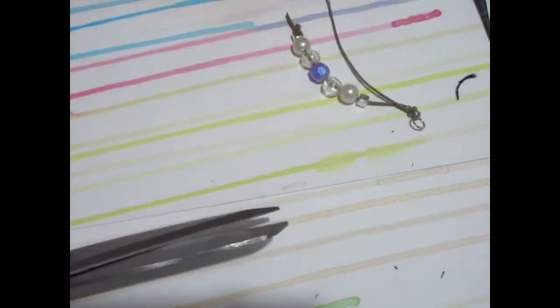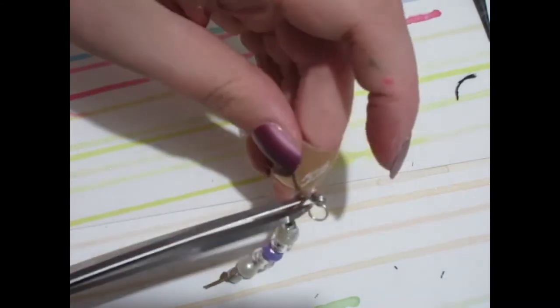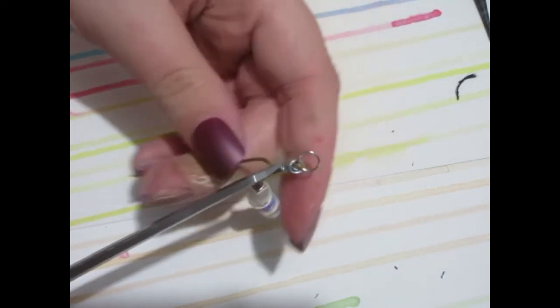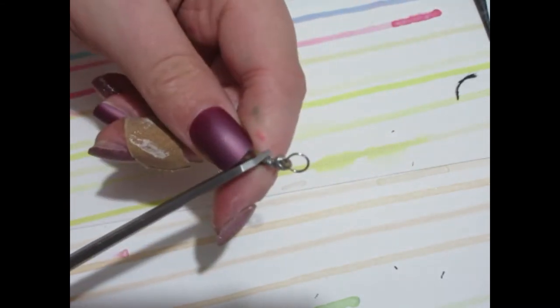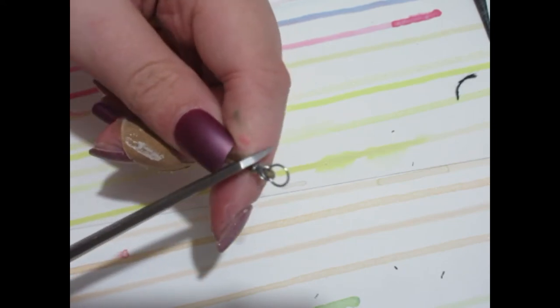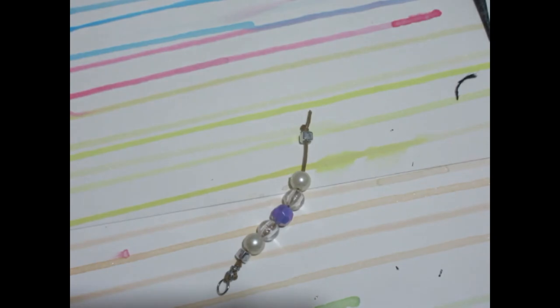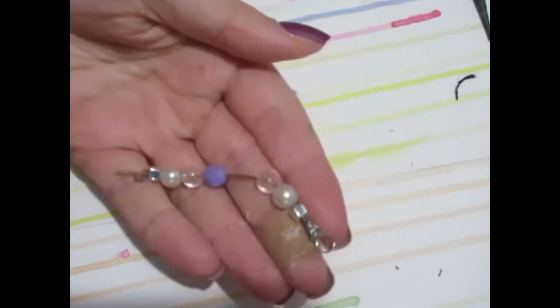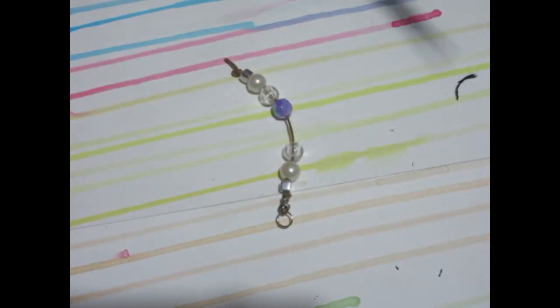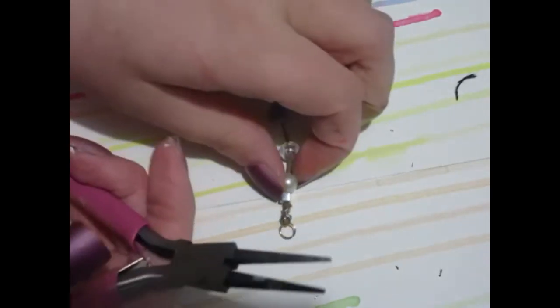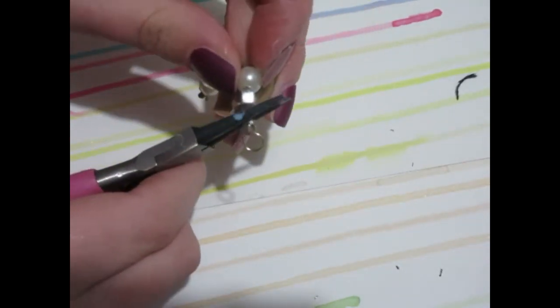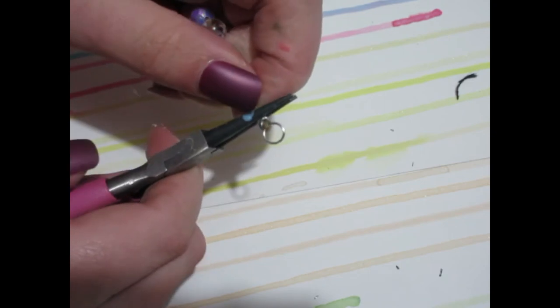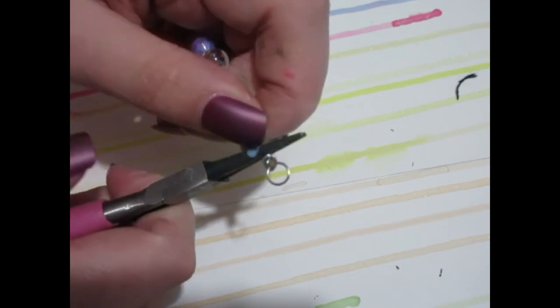And use these scissors to cut off the excess cord. Then I used the pliers and I just pinched the wire down so that it would be even more secure on the cord.